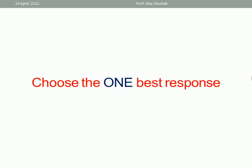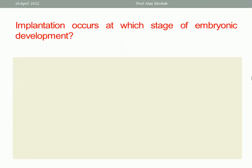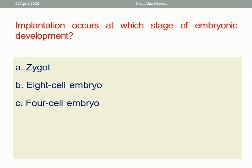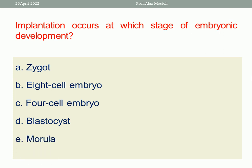Choose the one best response. First question: Implantation occurs at which stage of embryonic development? Options: Zygote, 8-cell embryo, 4-cell embryo, blastocyst, or morula. The best one response here is blastocyst.